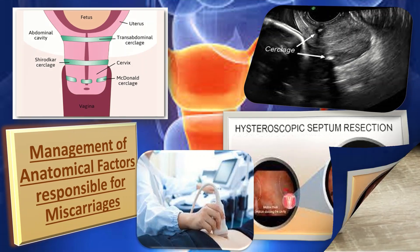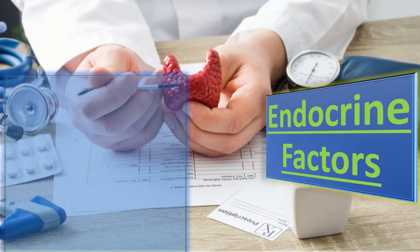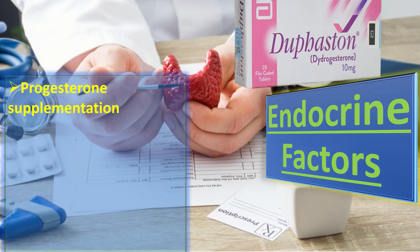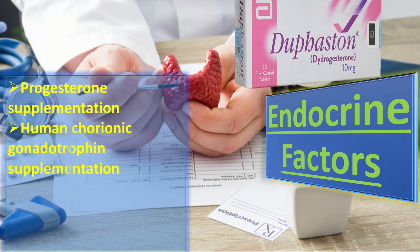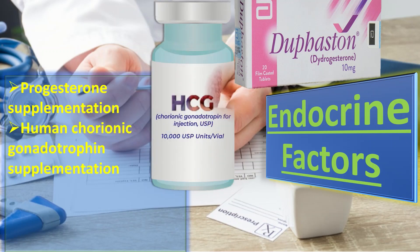Regarding endocrine factors: there is insufficient evidence to evaluate the effect of progesterone supplementation in pregnancy to prevent miscarriage in women with recurrent miscarriages. Similarly, there is insufficient evidence to evaluate the effect of human chorionic gonadotrophin supplementation in pregnancy to prevent miscarriage in a woman with recurrent miscarriage.